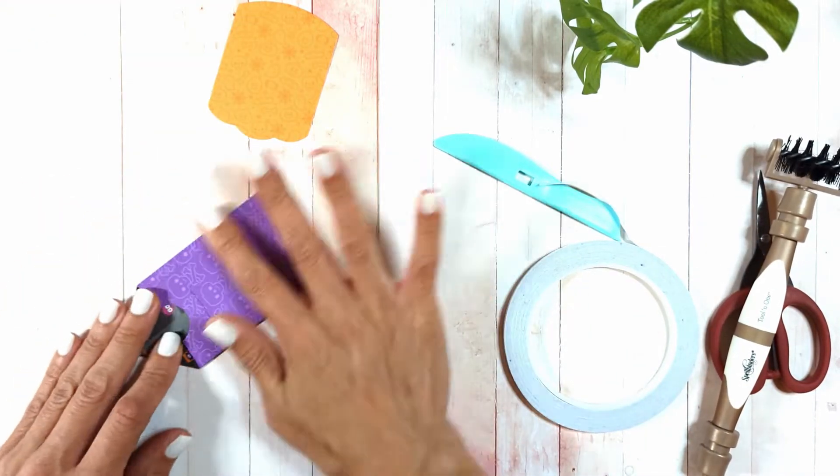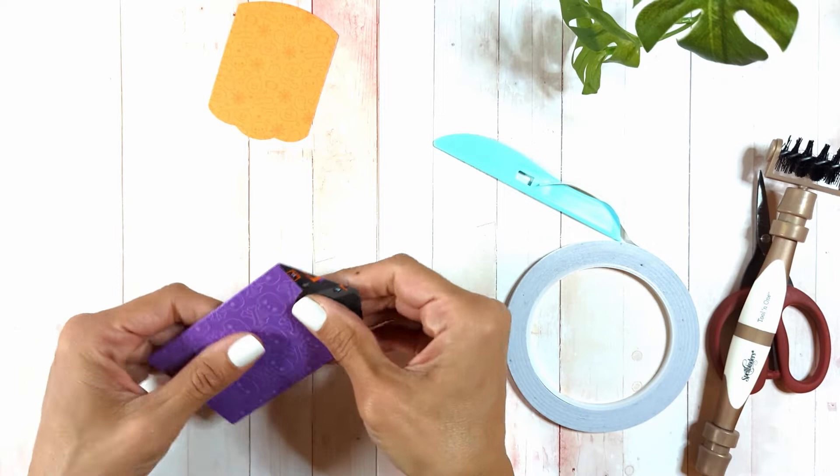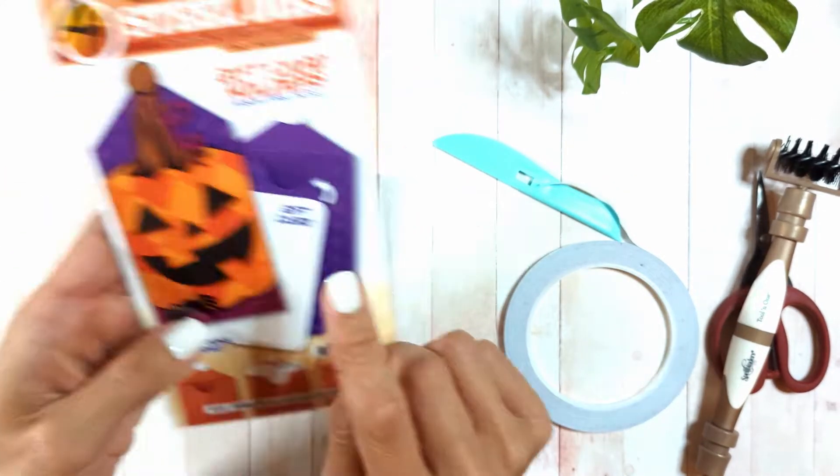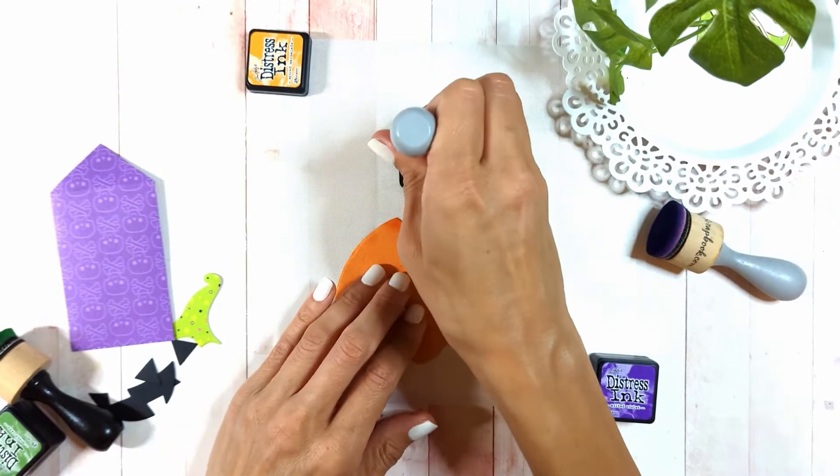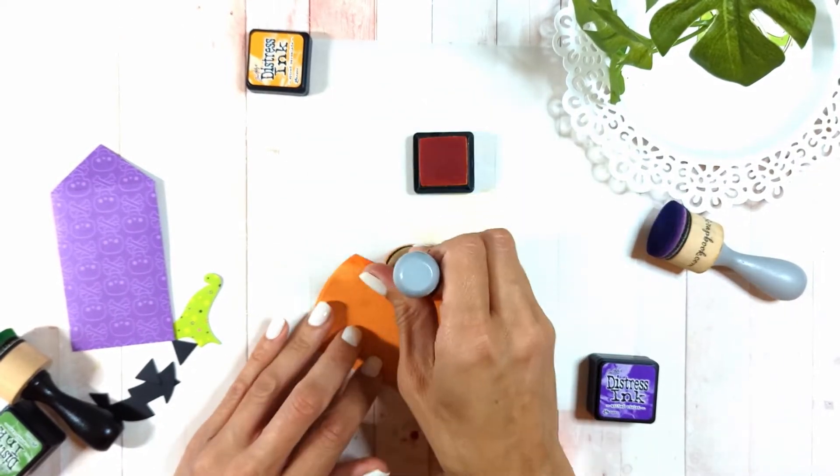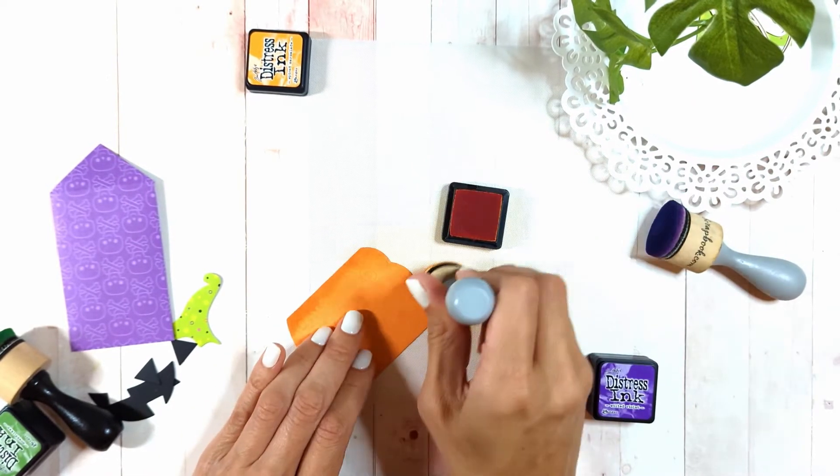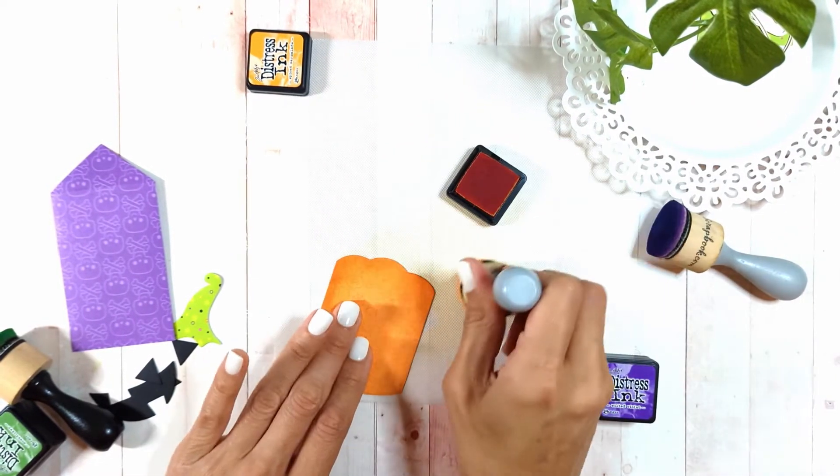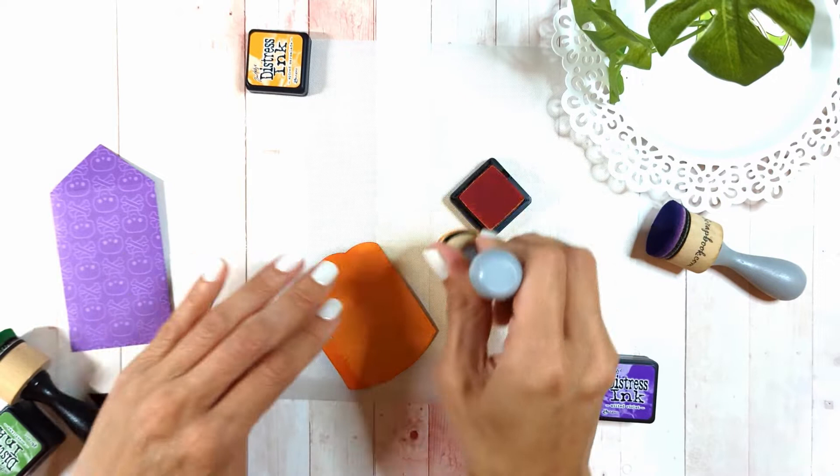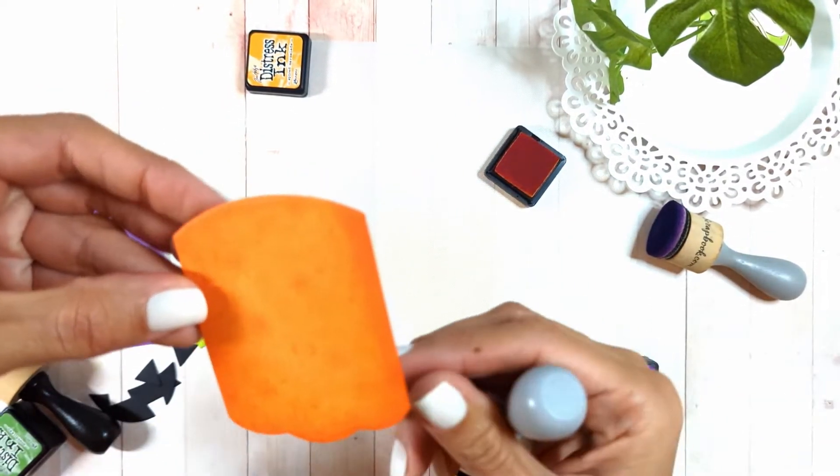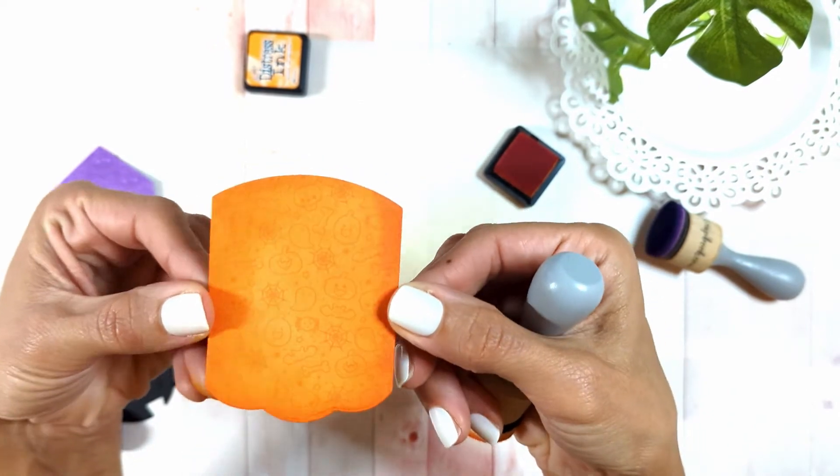Look how cute it is. There is a pumpkin add-on for that gift card holder. I wanted to give a little more depth and dimension to my pumpkin, so I'm blending Spiced Marmalade around all the edges. Look how cute and popped up it is. I did the same thing with Mowed Lawn Distress Ink on the edges of the stem.